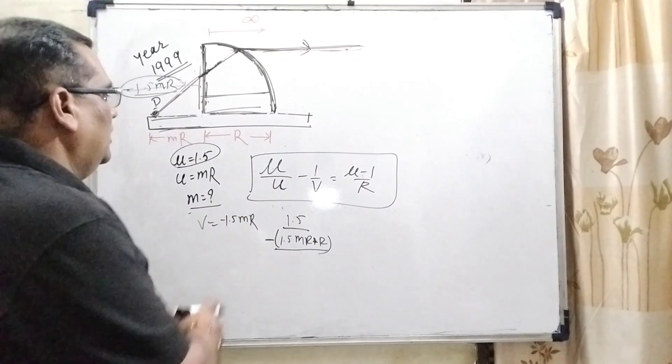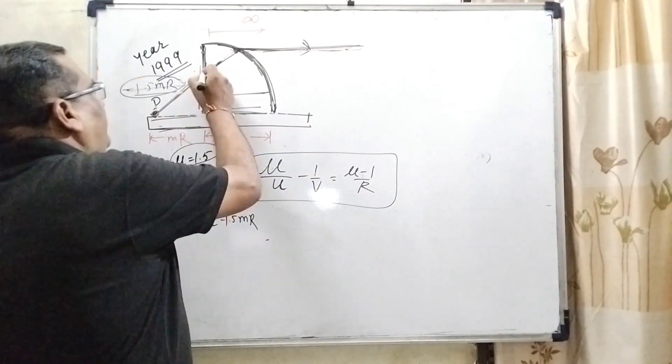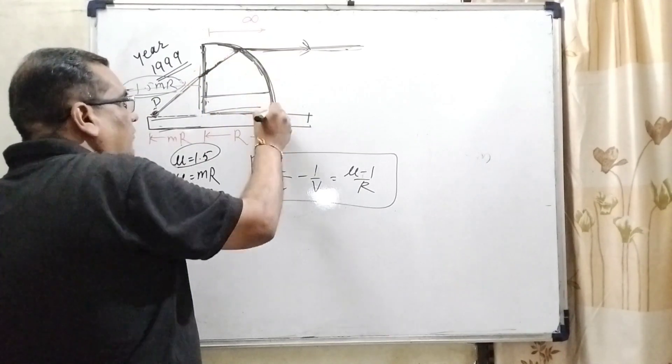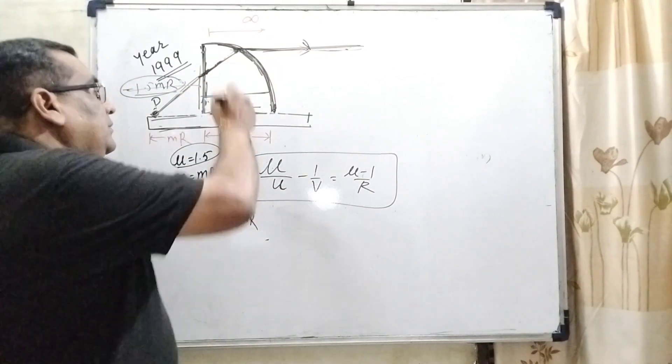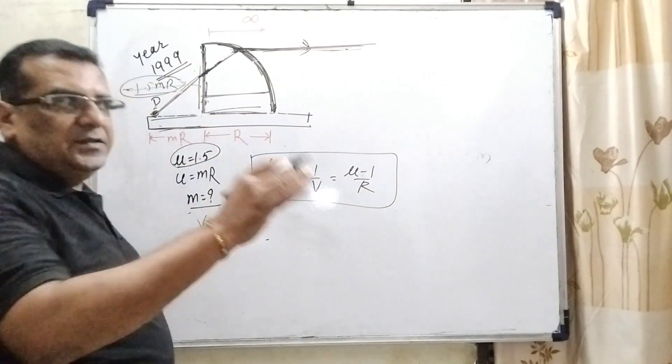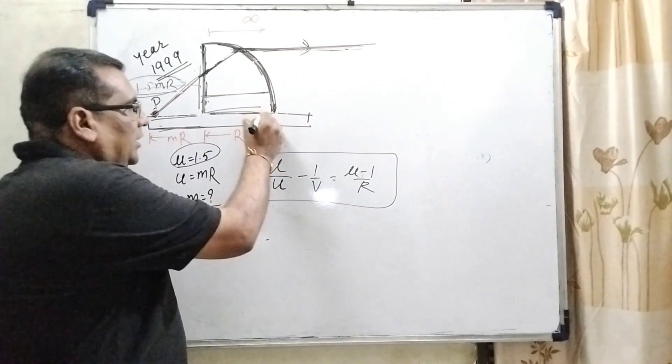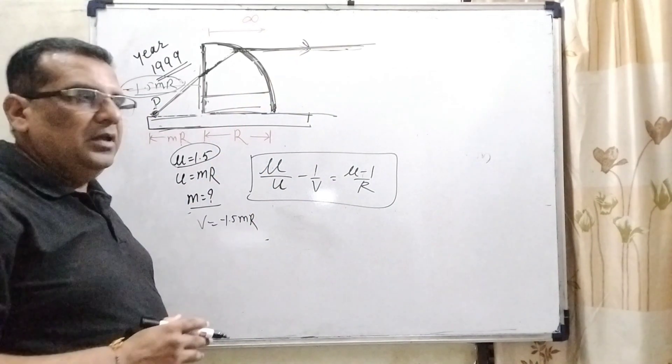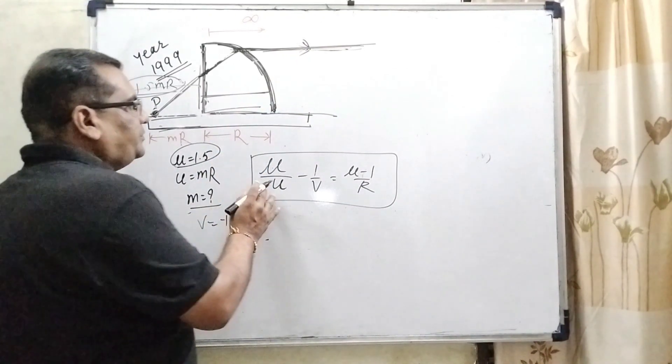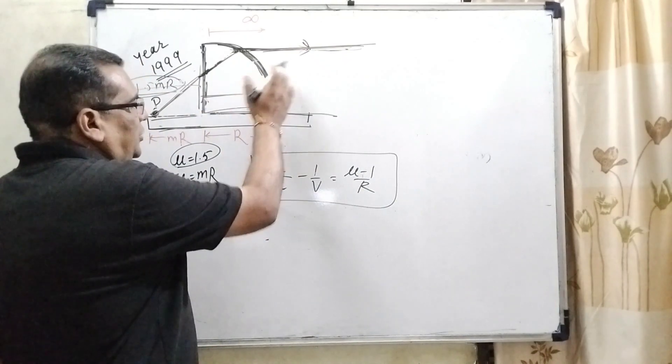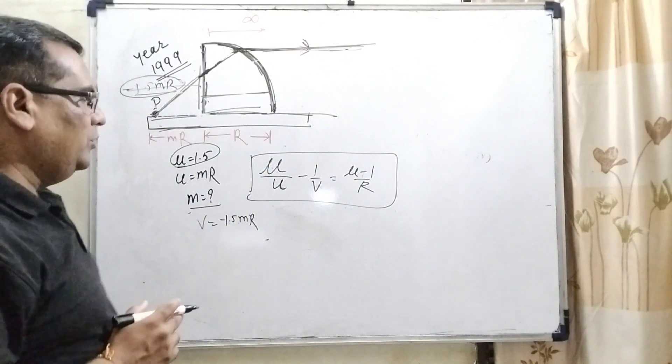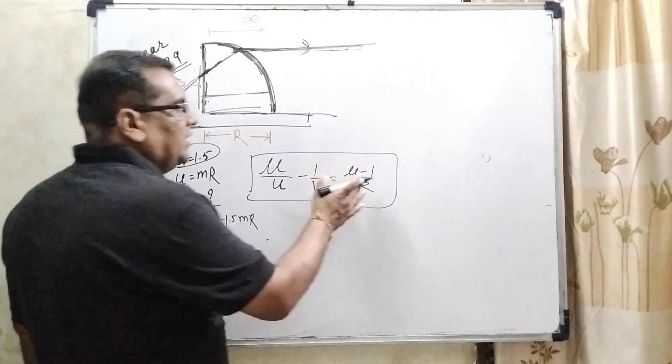Now here after first refraction, this ray goes towards this curved surface and emerges in parallel path or traces the same or parallel path with the principal axis. It means image is formed at infinity. Here we are using refraction through denser medium to rarer medium. That time we are using mu by u minus 1 by v equal to mu minus 1 by r.